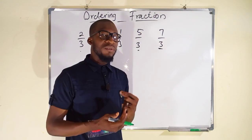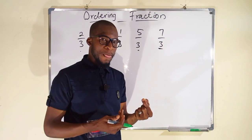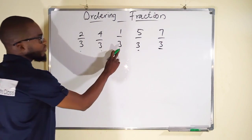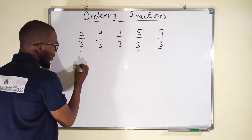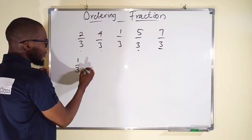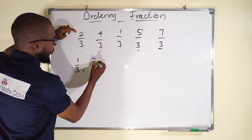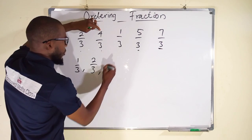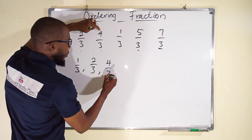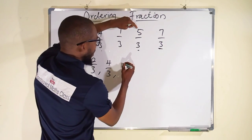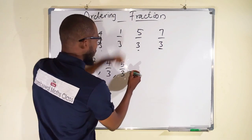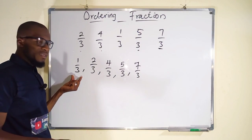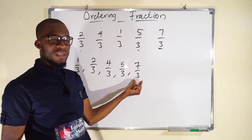To arrange them in ascending order, you have to start from the smallest, while in descending order you have to start from the biggest. So in this case, we are going to write them accordingly: 1 over 30, followed by 2 over 30, then 4 over 30, followed by 5 over 30, and lastly 7 over 30. So 1 over 30 is the least, while 7 over 30 is the biggest.